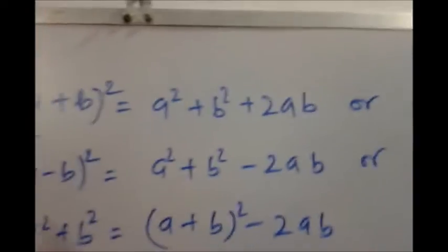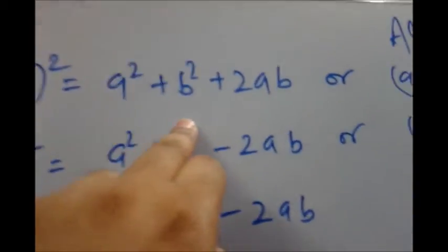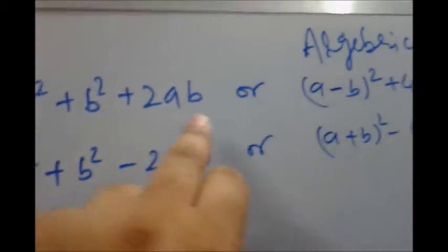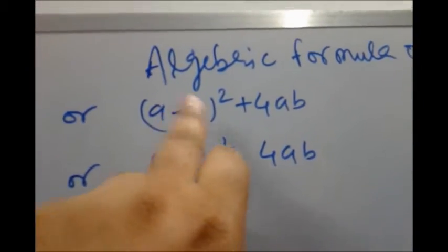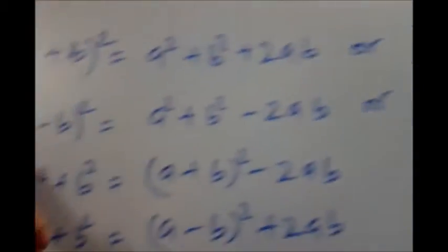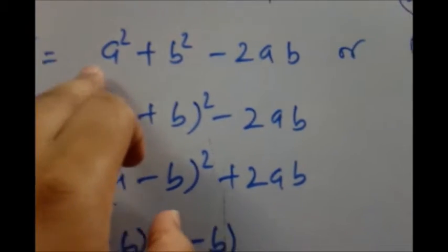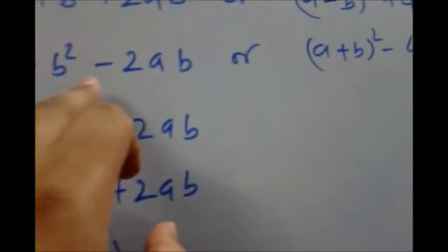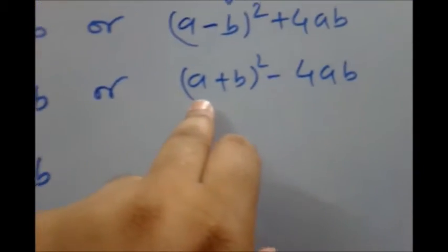Let's have a look at some formulas. First: (a + b)² = a² + b² + 2ab, or equivalently (a - b)² + 4ab. Second formula: (a - b)² = a² + b² - 2ab, or equivalently (a + b)² - 4ab.